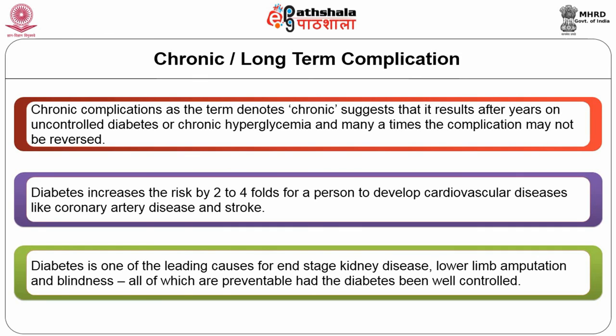Chronic complications result after years of uncontrolled diabetes and may not be reversible. Diabetes increases risk by two to four folds for cardiovascular disease such as coronary artery disease and stroke. Diabetes is one of the leading causes of end-stage renal disease, blindness, and lower limb amputation — all preventable with well-controlled diabetes.